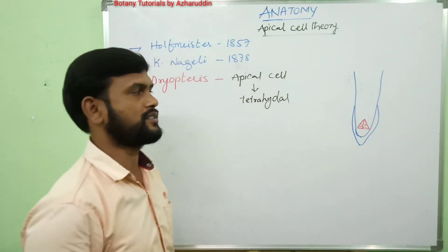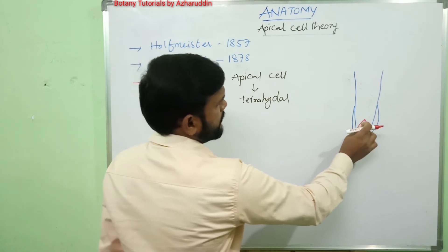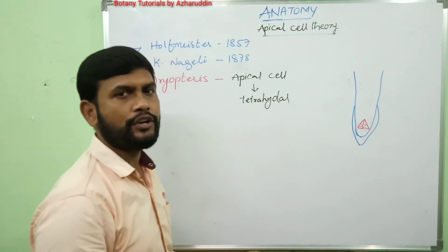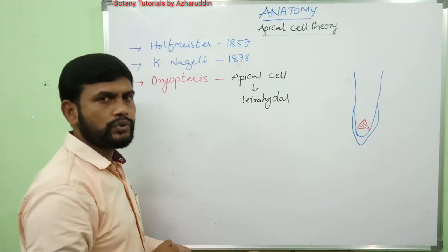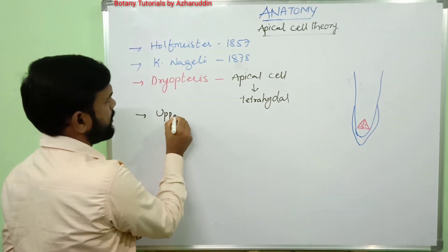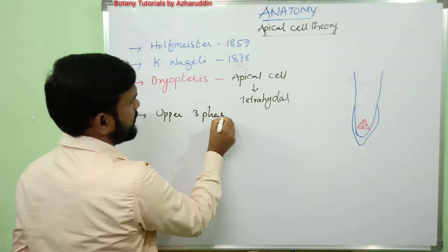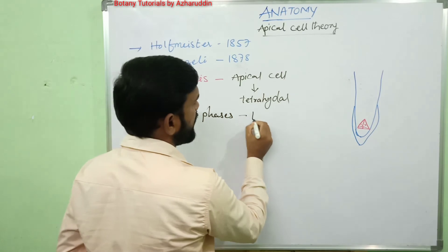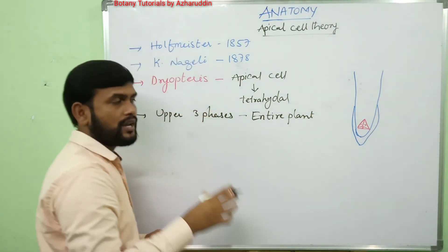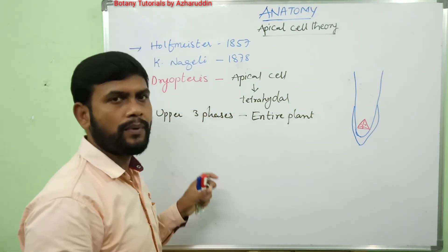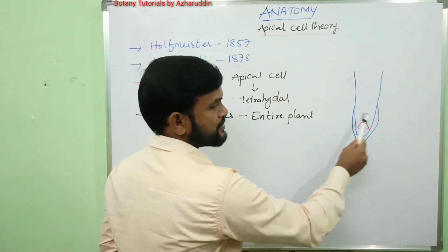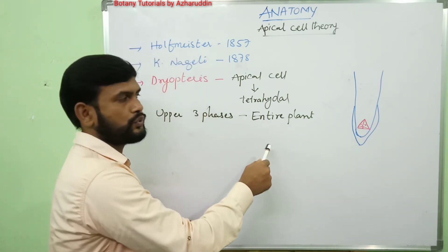The upper three faces — face one, two, and the back side — divide and redivide to produce the entire tissue in the plant body. They produce tissues in the root and stem. This apical cell is considered responsible for the formation of all tissue in the plant body.